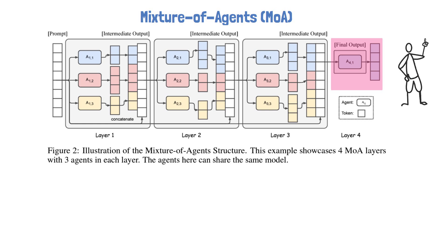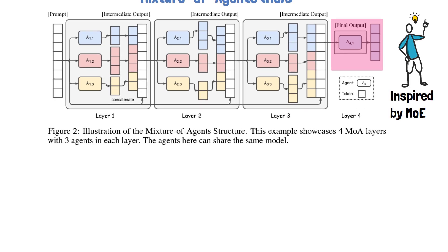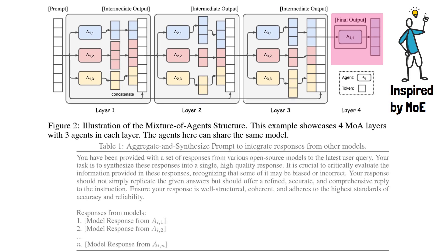This method is inspired by the Mixture of Experts method, but here the experts being used are not parts of the same model but rather are full-fledged LLMs. The way that the last LLM determines the final output is using a special prompt which the researchers call the 'Aggregate and Synthesize Prompt', which introduces the intermediate responses already provided by LLMs and asks the model to evaluate them and come up with a final response.